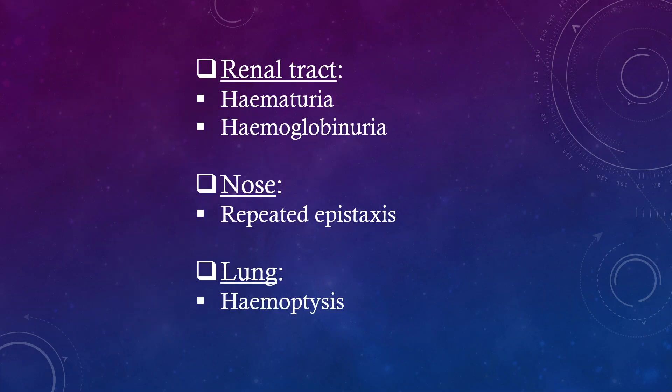Renal tract causes include hematuria and hemoglobinuria. Nose: repeated epistaxis. Lung: hemoptysis.